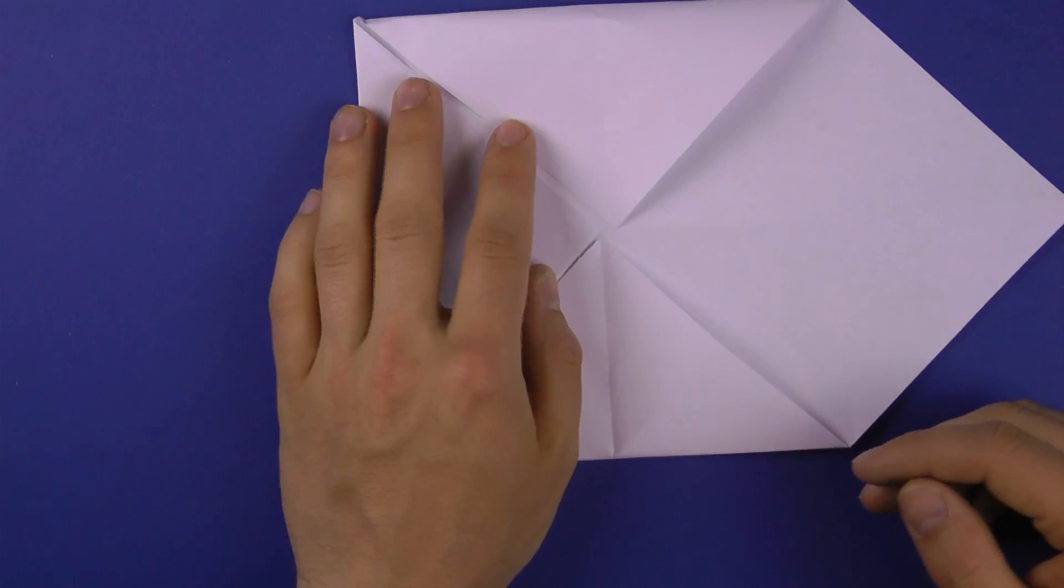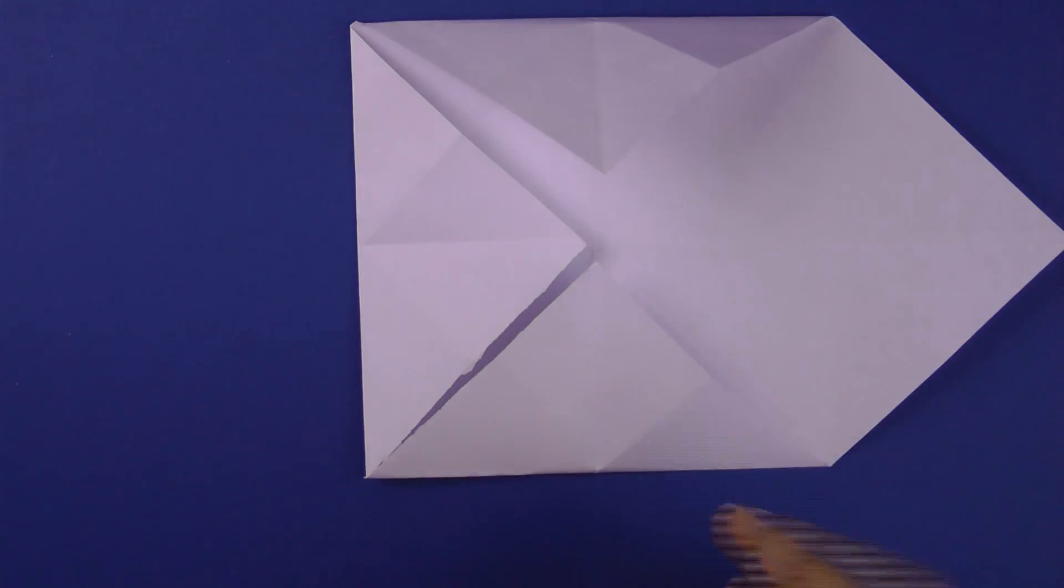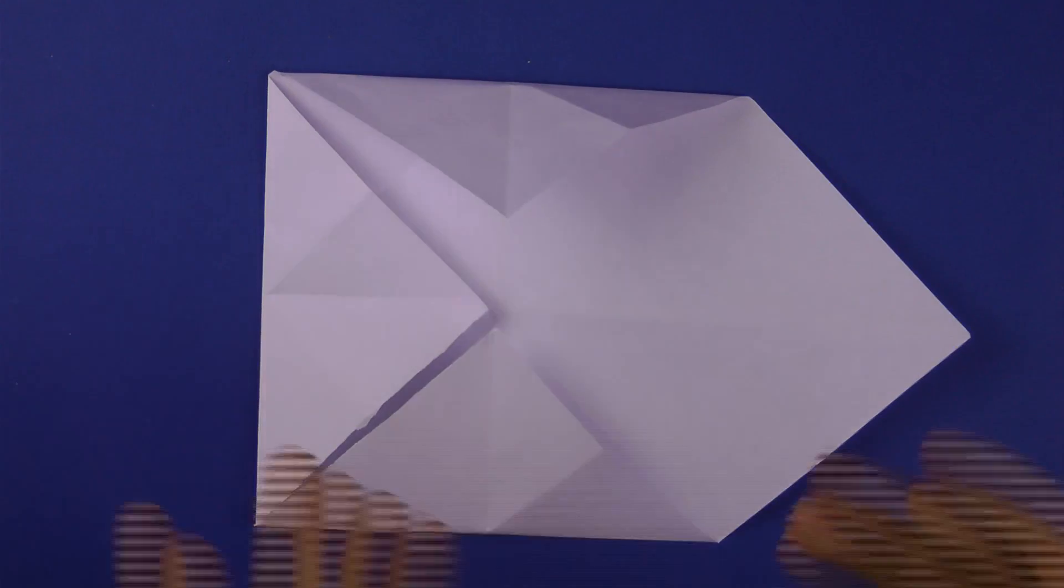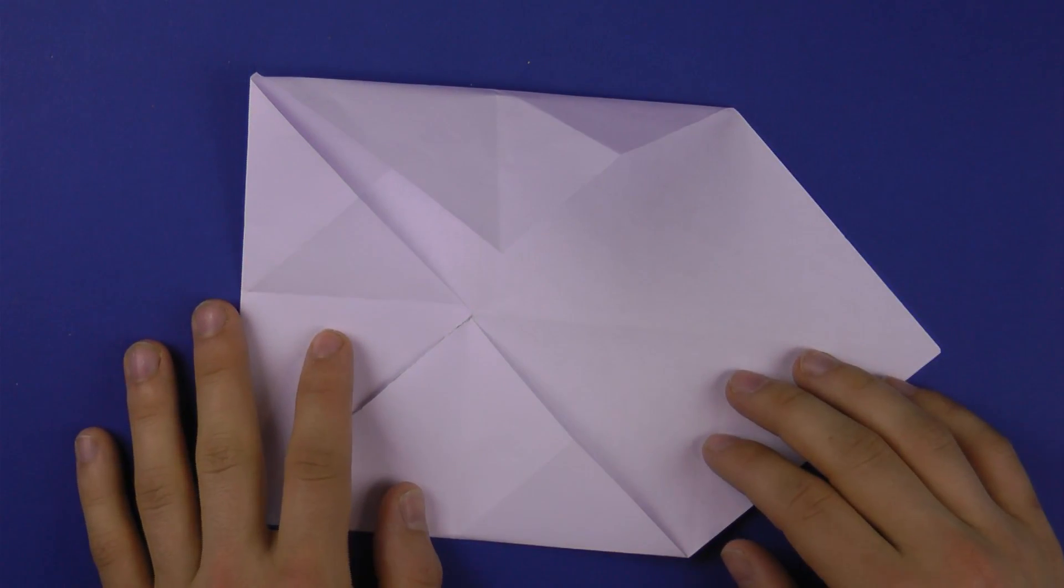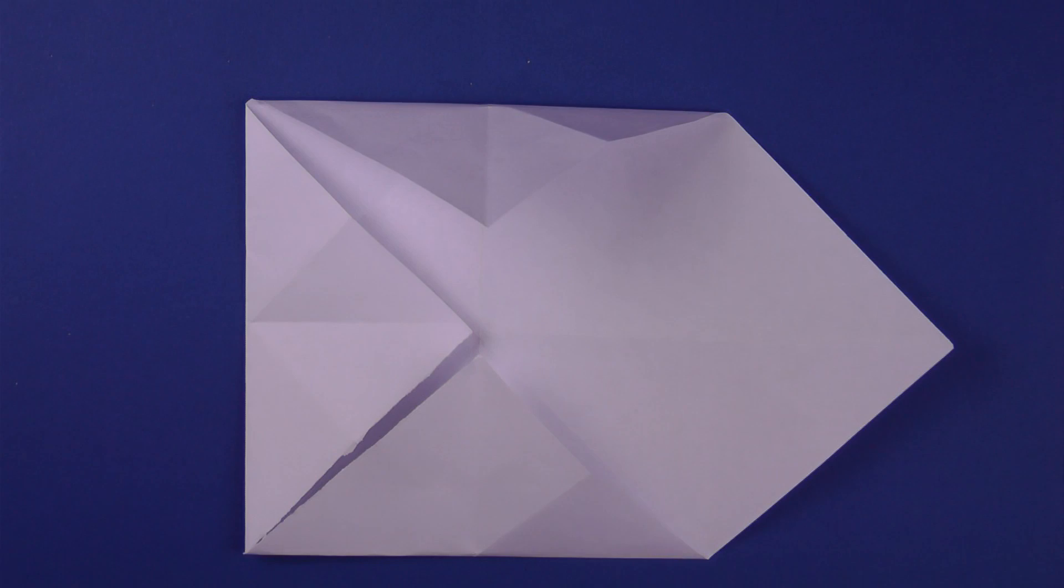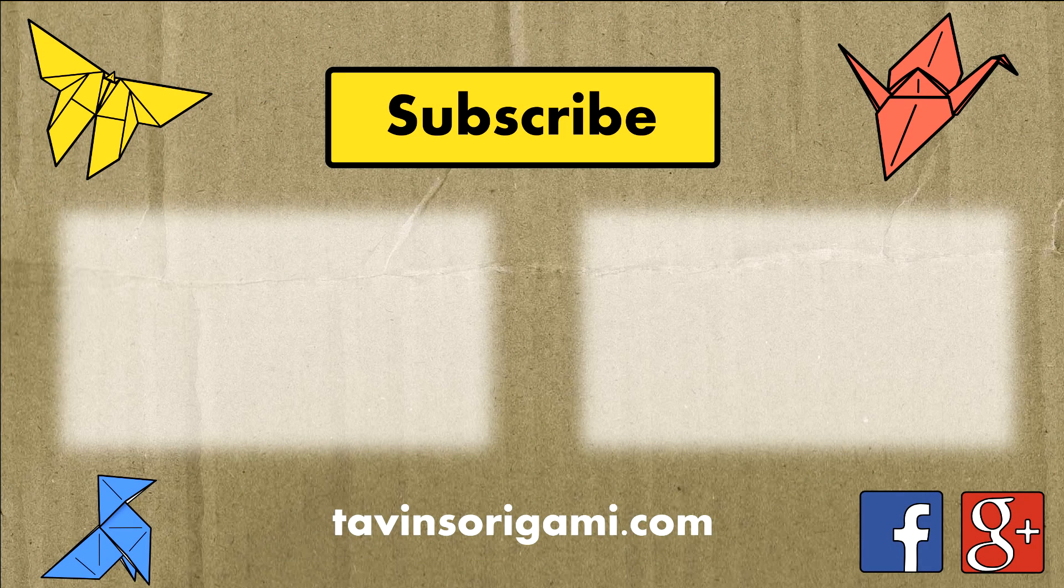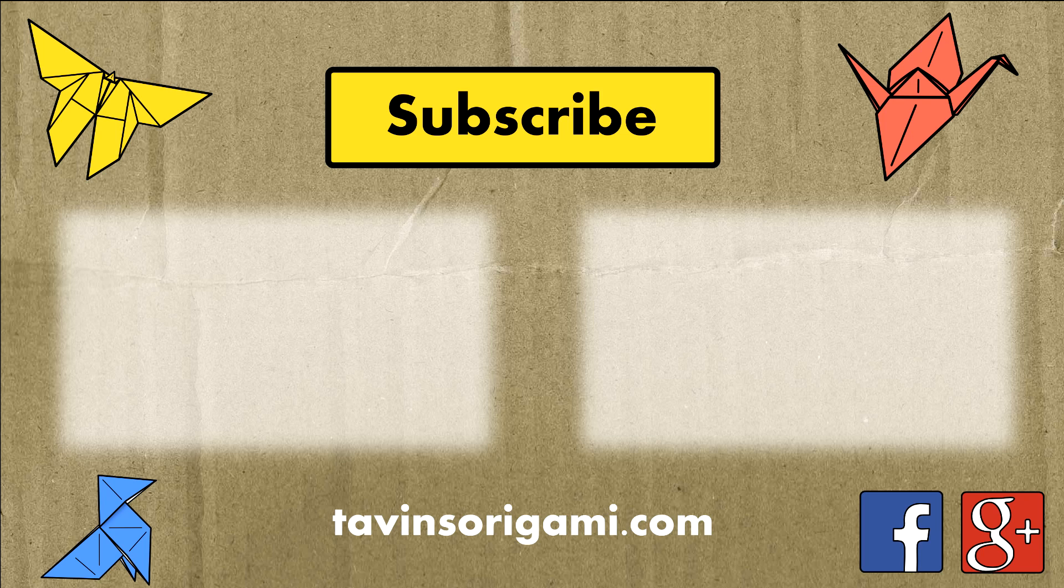So those are the four or five nice small tips and tricks that improve your folding. This was how to origami and if you want to see more like this you can subscribe to my channel which is totally for free or follow me on Facebook, Google Plus, take a look at my website tavinsorigami.com or and that would make me really happy give me a thumbs up or thumbs down if the video was not so good and leave me a comment. So see you next time, bye bye.